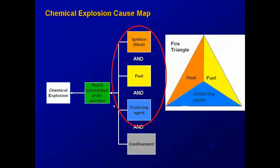If you remember what we looked at for the fire triangle, heat source, fuel, and oxidizing agent are what makes up the fire triangle. A chemical explosion is just a rapid similar chain reaction to that of a fire. So if you have all of these elements confined, you end up having that reaction be so rapid that it results in a chemical explosion instead of a fire.